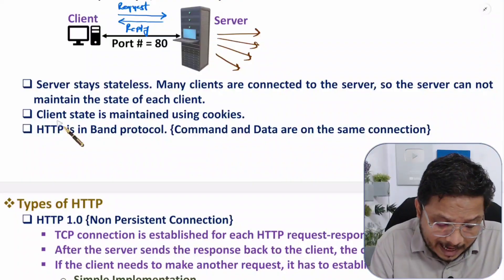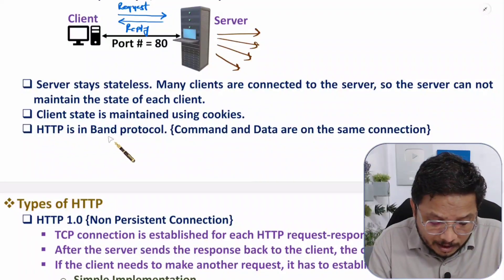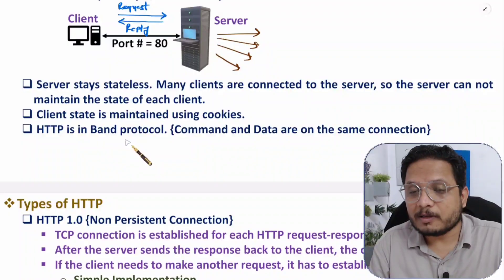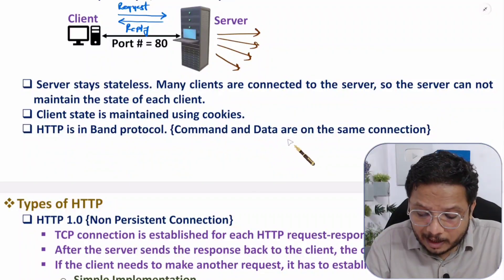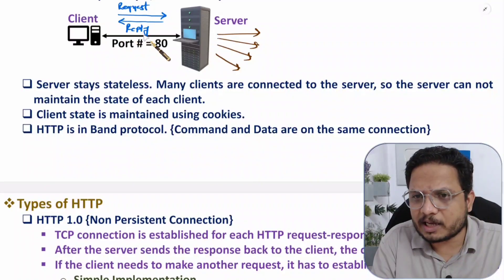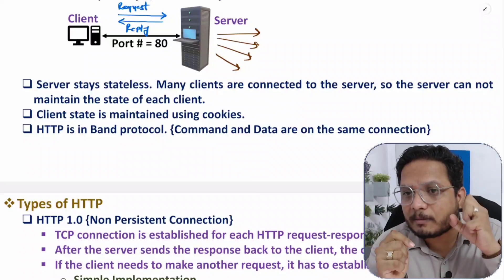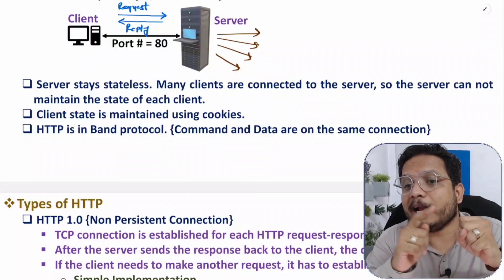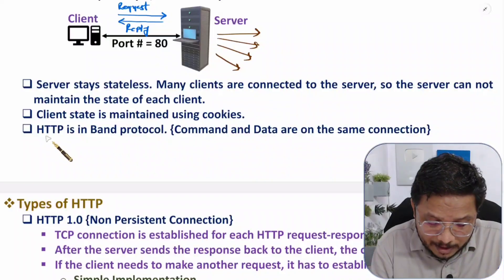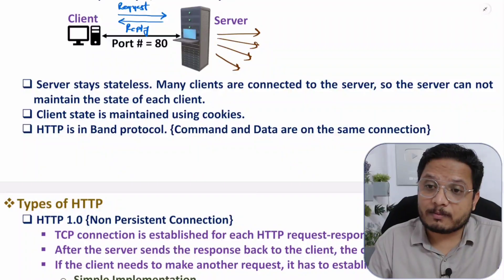Client state is maintained using cookies. HTTP is an in-band protocol — meaning commands and data are on the same connection. In a TCP connection, when the client requests something, both the command and the data travel on the same connection. That is why HTTP is referred to as an in-band protocol.